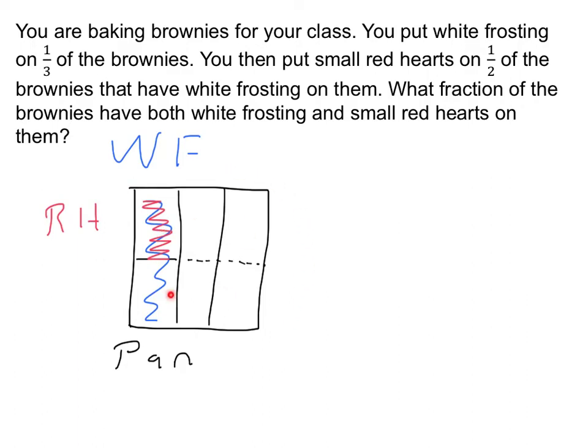From the picture we see that our whole pan is now broken up into six pieces. On one of those pieces, we have both white frosting and red hearts. So from the picture, we can see that our answer is going to be one-sixth.